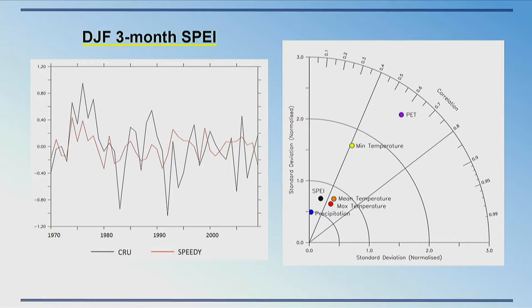Looking at SPEI: SPEEDY does seem to get the pattern of SPEI for the DJF period, just not the range — it's not quite capturing the extreme highs or lows. Looking at the Taylor diagram, it really seems to be precipitation that is pulling the SPEI value down.